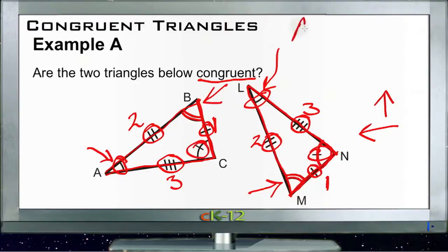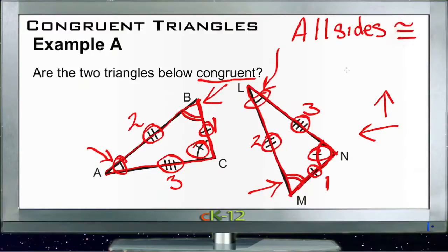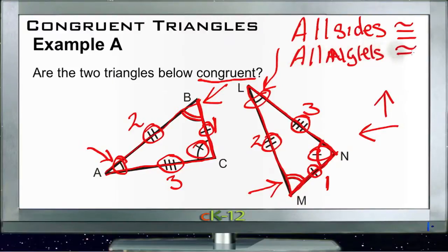All sides are congruent and all angles are congruent, which means the triangles are exactly the same size and exactly the same shape. So yes, these two triangles are congruent. Now let's take a look at Example B.